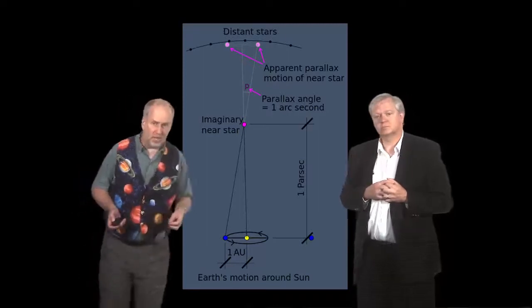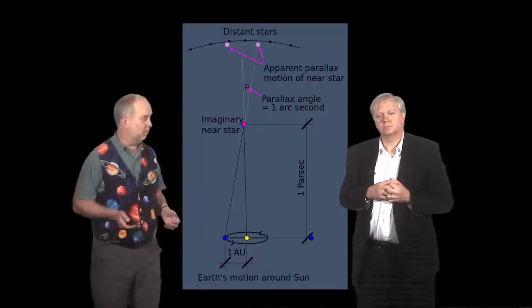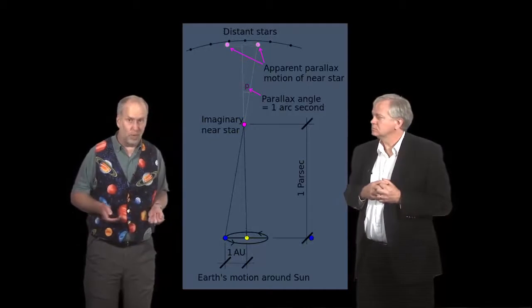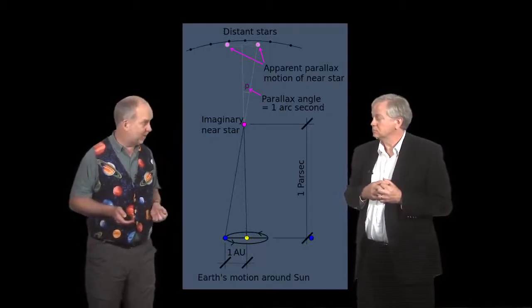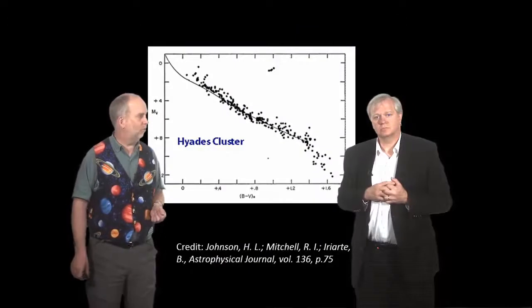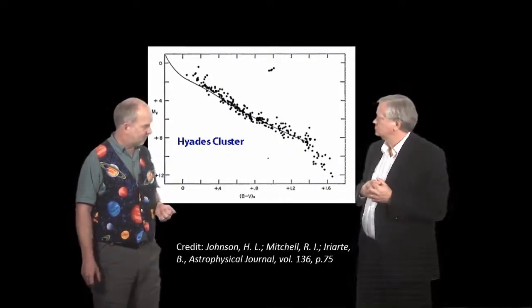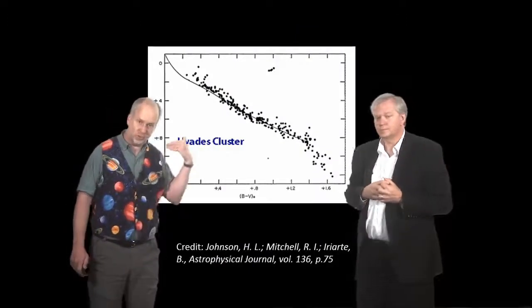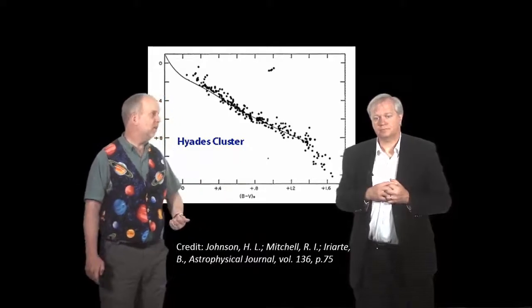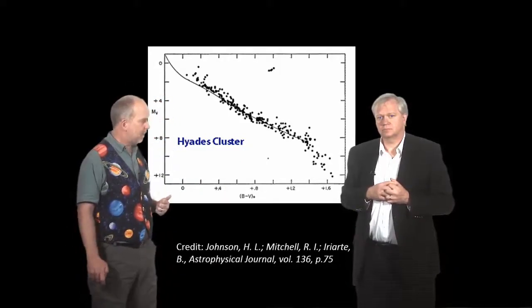However, the most accurate measurements around today for most stars come from the European Space Agency's Hipparcos satellite, and that was good enough to get us out to the nearest cluster of stars, the Hyades cluster. So that's the first step of the distance ladder. It gets us out to the Hyades cluster, and now we get the second step which is main sequence fitting.